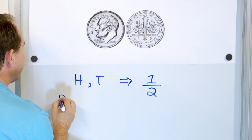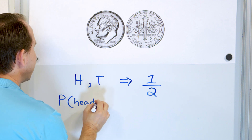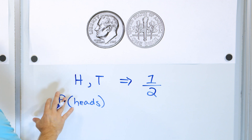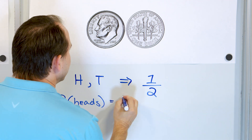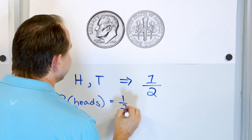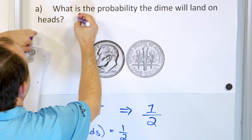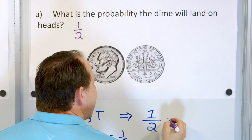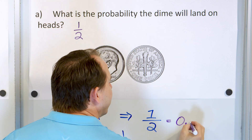You write it as the probability of heads — written as P(heads). This does not mean multiplication or anything fancy. It just means the probability of getting heads is equal to one half. And one half, when we divide it out, gives us 0.5. So you can write it as the fraction one half or the decimal 0.5.